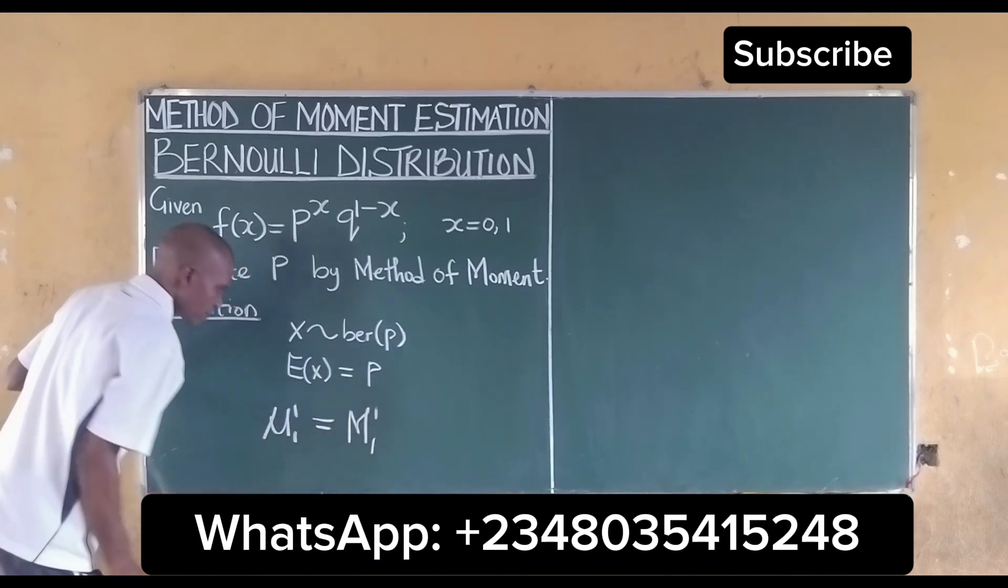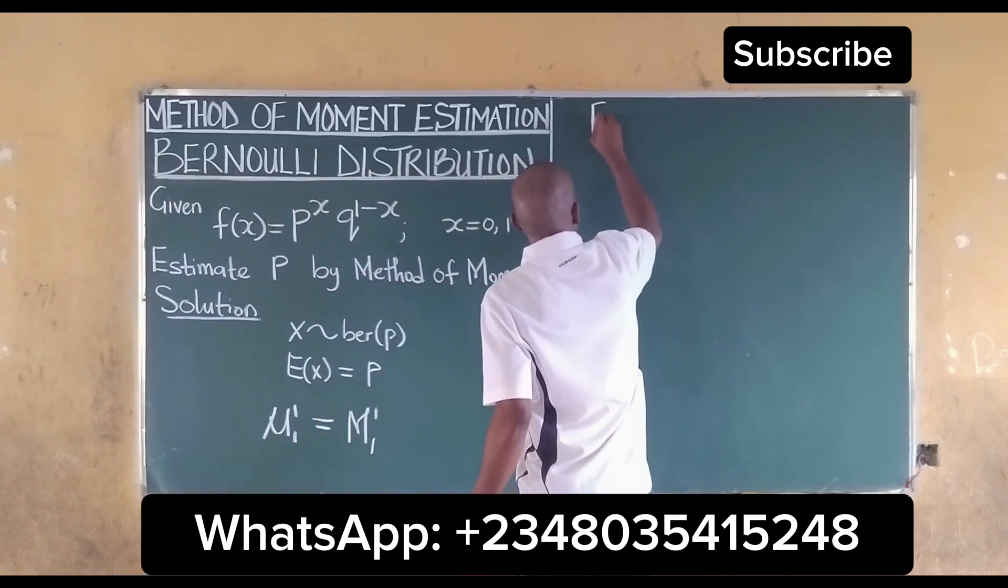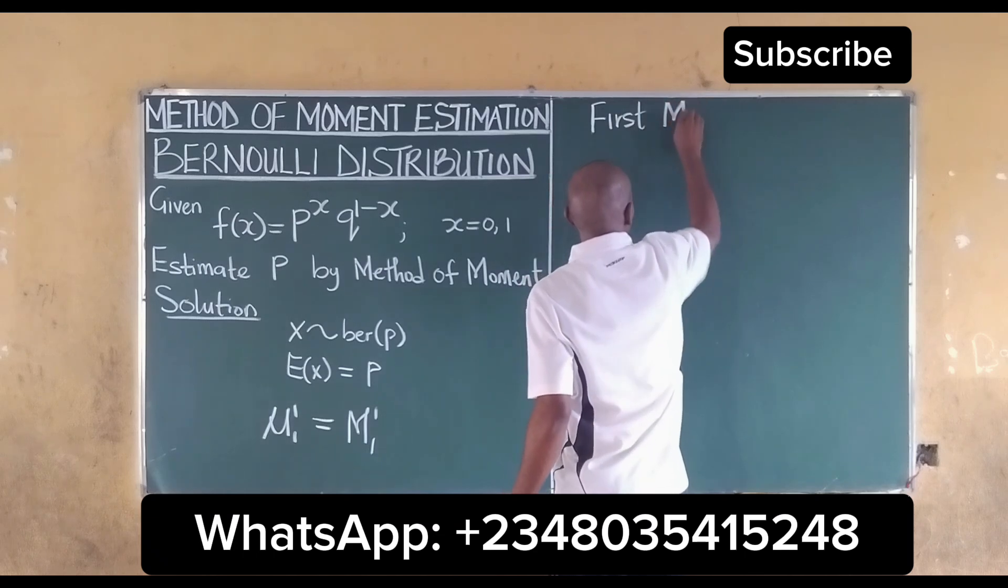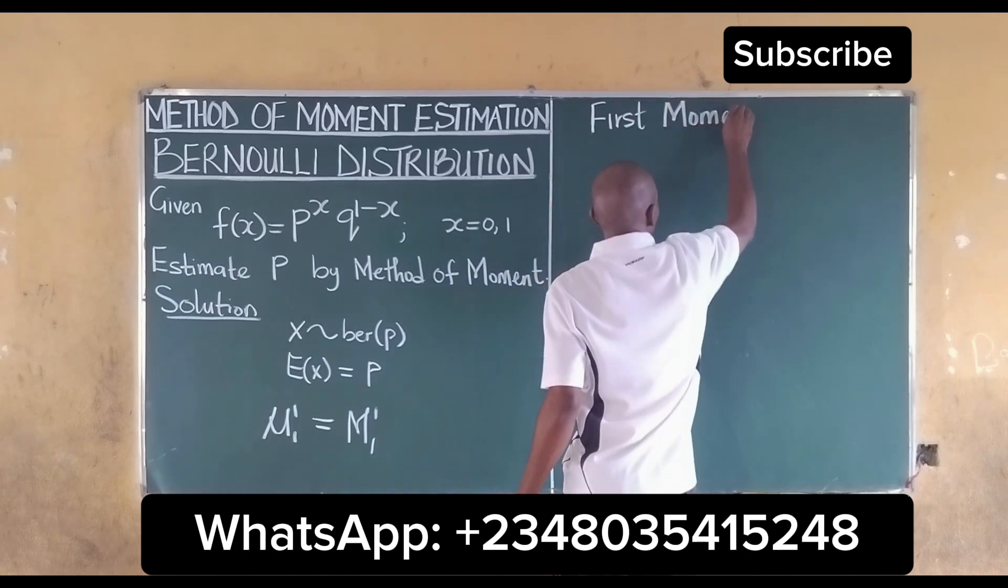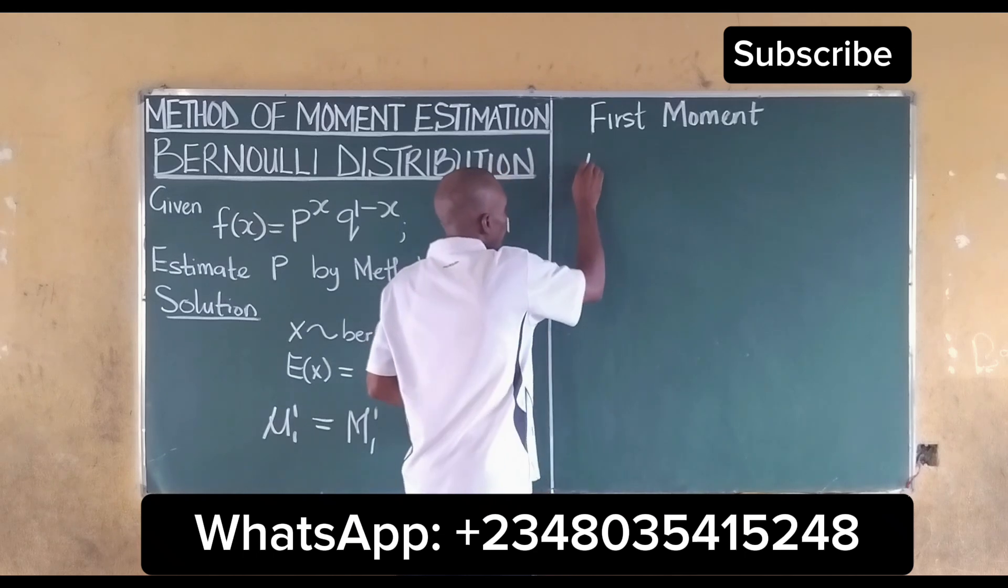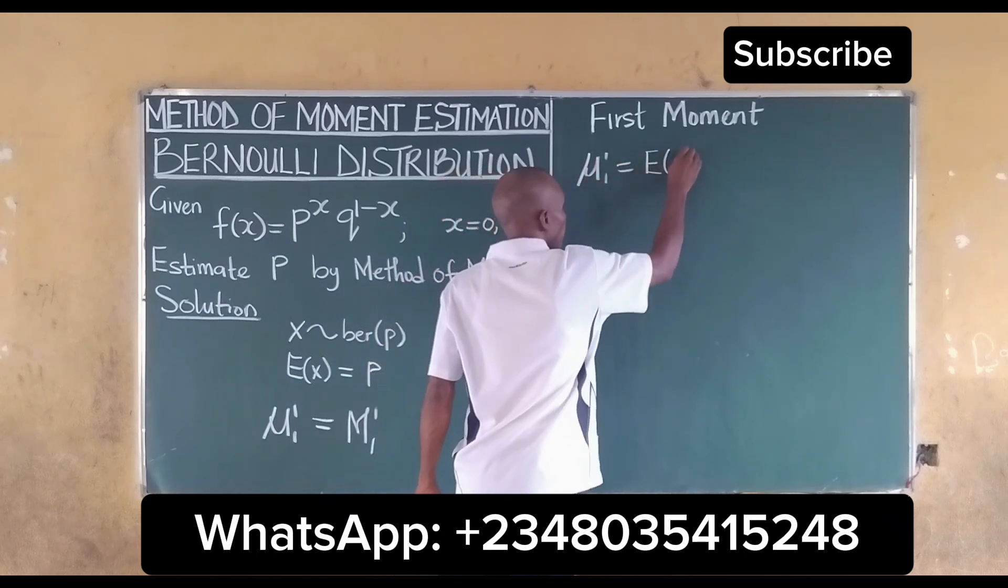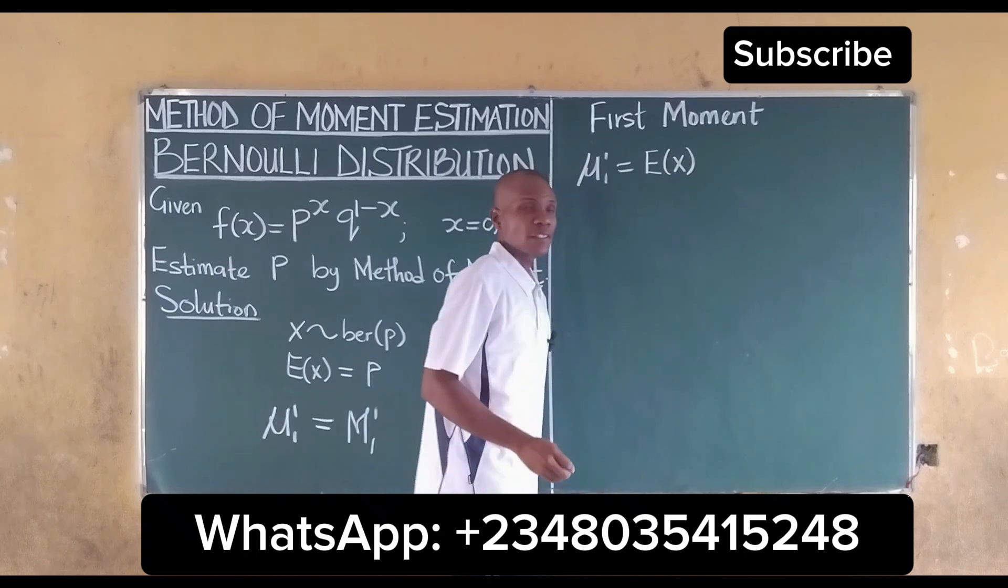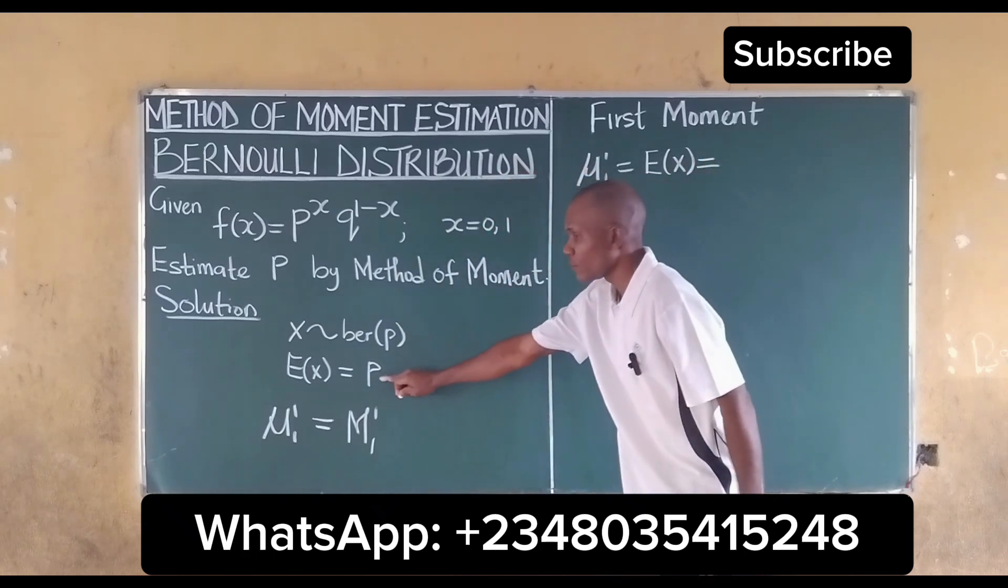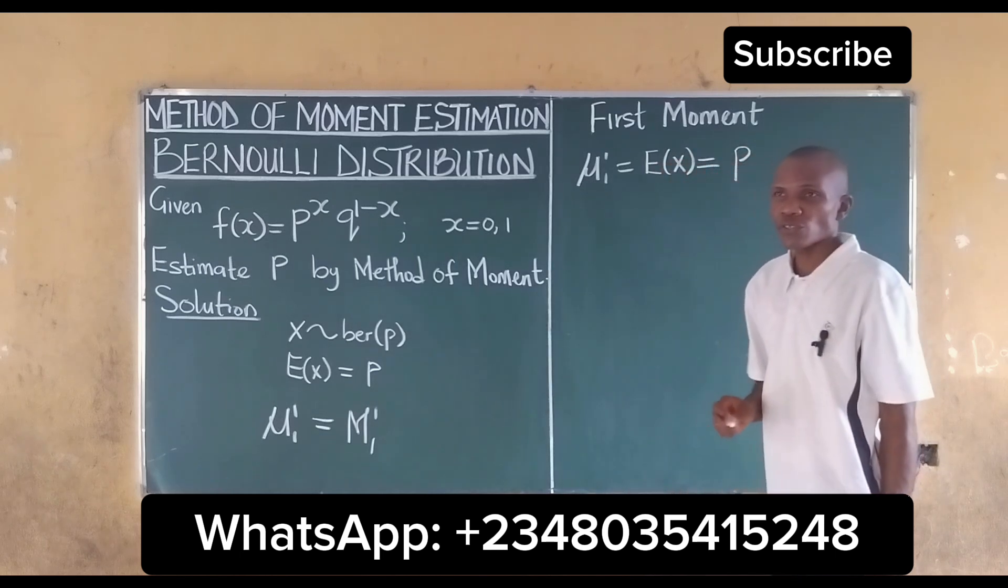Then for the first moment, for the first moments, the population mean is equal to the expected value of X, and the expected value of X is equal to p. Also, the sample mean is equal to 1 over n summation of Xi.